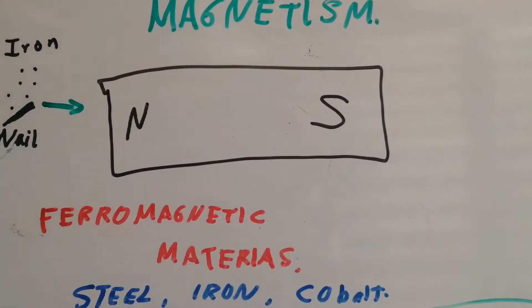When we talk about this topic, we're going to talk about something called ferromagnetic materials. They are like steel, iron, cobalt, and there are others. And they can easily be magnetized.